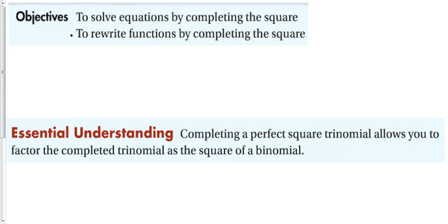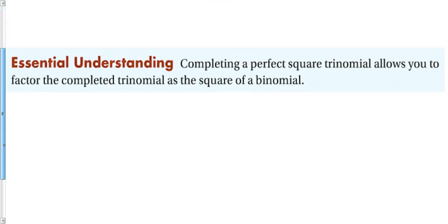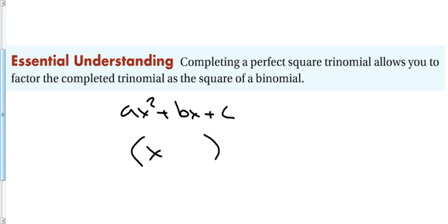Our essential understanding is that completing a perfect square trinomial allows you to factor the completed trinomial as the square of a binomial. That means we are going to take some quadratic of the form ax squared plus bx plus c and change it so that it looks like a quantity squared — changing a trinomial to the square of a binomial. We figure out what we need and complete the square.